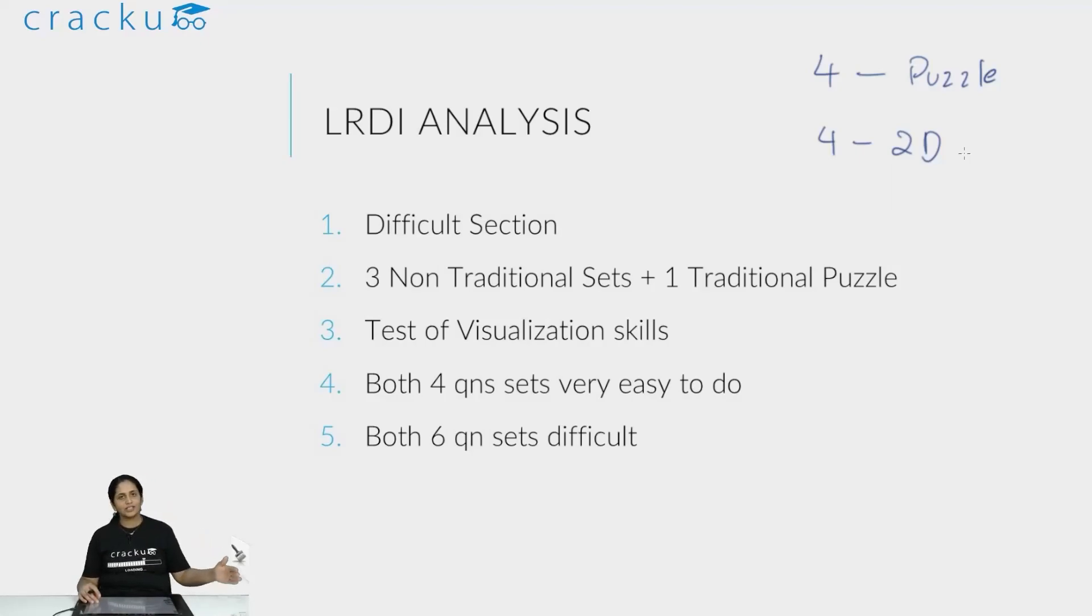Whenever you have difficult sections in LRDI or Quant, lower your expectations. If you are smart about it, you should say that I should not index myself to a number value or absolute score value. You should index yourself to a percentile value, and when you are targeting a percentile value, what matters more is that you do relatively better, not absolutely better. You should not say that I will get all four sets right. To do relatively better, you have to be smart in how you pick the sets, in which questions you pick. Whenever questions or sections become difficult, having that kind of hold on your nerves, that maturity, essentially lower expectations—that is what will come into play.